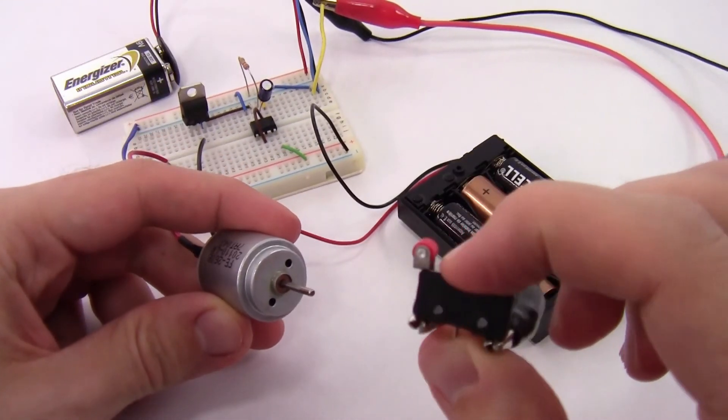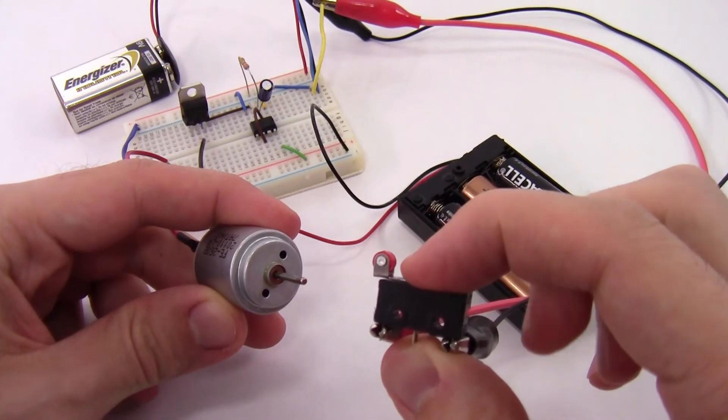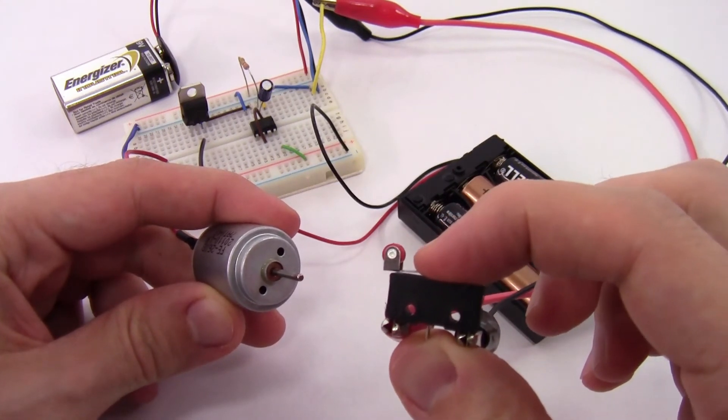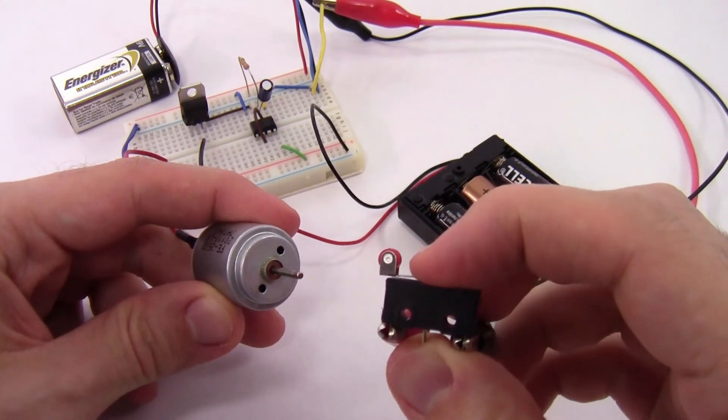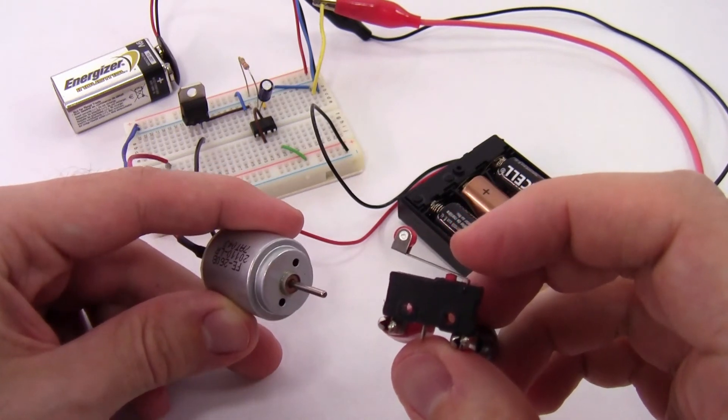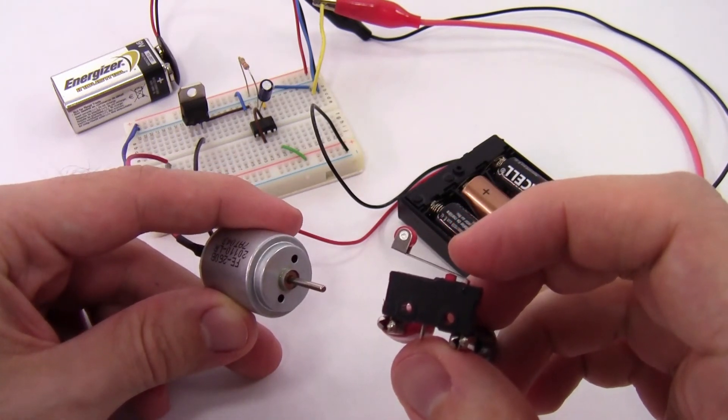But again you don't want a slide switch you want a limit switch that you can mount on the inside of the box. So here's the limit switch, imagine that this is inside the lid of the box, the lid gets open, wait a few seconds, then your unsuspecting victim will fall prey to your glitter.